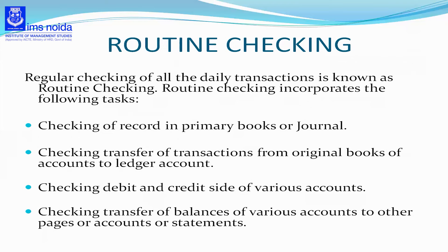So first, the recording in the journal is checked; second, when we transfer transactions from the journal to the ledger, those should also be checked. Third is checking the debit and credit side of various accounts — it is checked whether the transactions recorded are correctly recorded as per the debit and credit rules of accounting. The last task is checking the transfer of balances of various accounts to other pages, accounts, or statements, to verify whether the transfers and values recorded are correct.